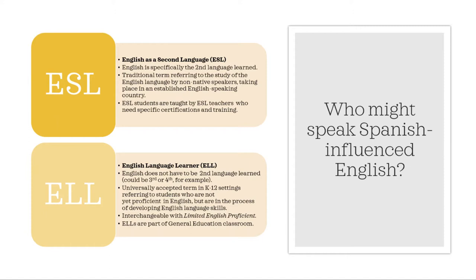However, there are more qualities that pertain to each of these terms that differentiate them. ESL is a traditional term used to refer to the study of the English language by non-native speakers, which takes place in an established English-speaking country. ESL students are pulled out of the general education classroom to be taught by ESL teachers who need specific certifications and training. English language learner is a universally accepted term used in K-12 settings to refer to a student who is not currently proficient as an English speaker and who is in the process of developing English language skills. ELL is interchangeable with the term Limited English Proficient, or LEP. In contrast to ESL students who are taught by special ESL teachers, ELL students are part of the general education classroom.